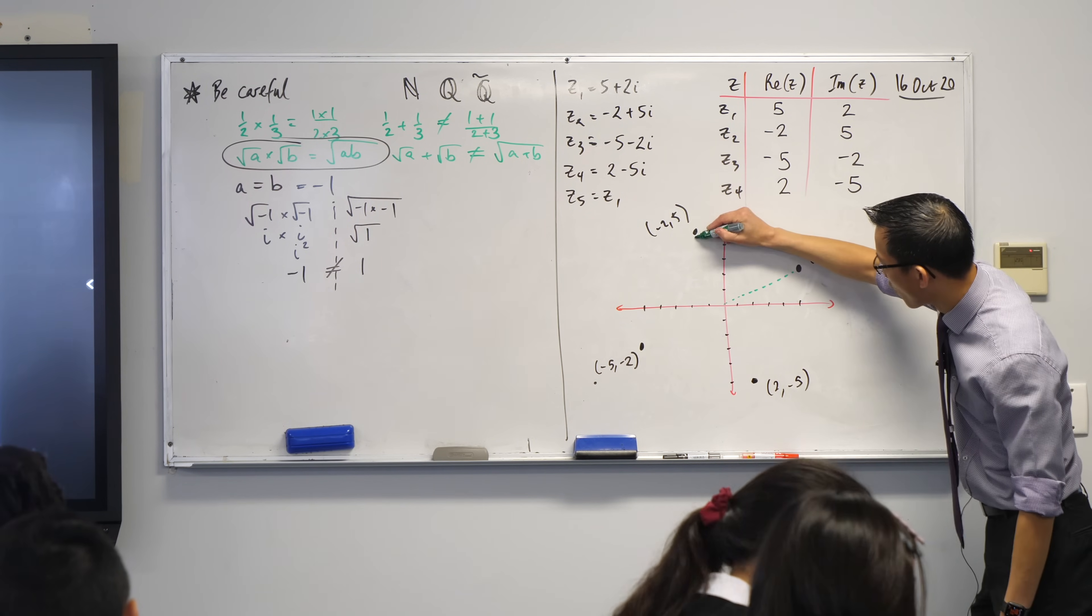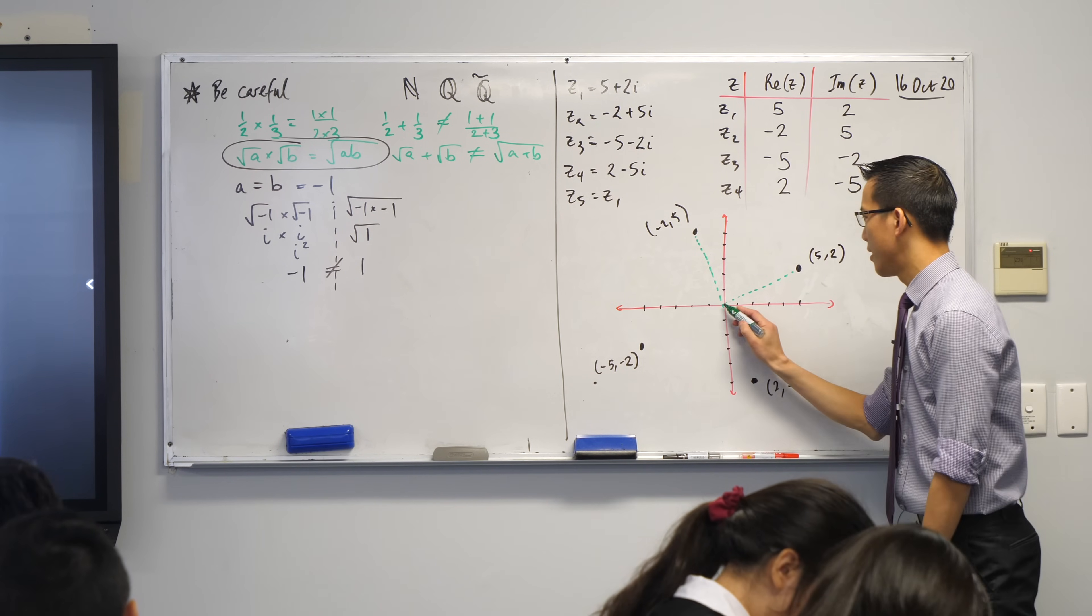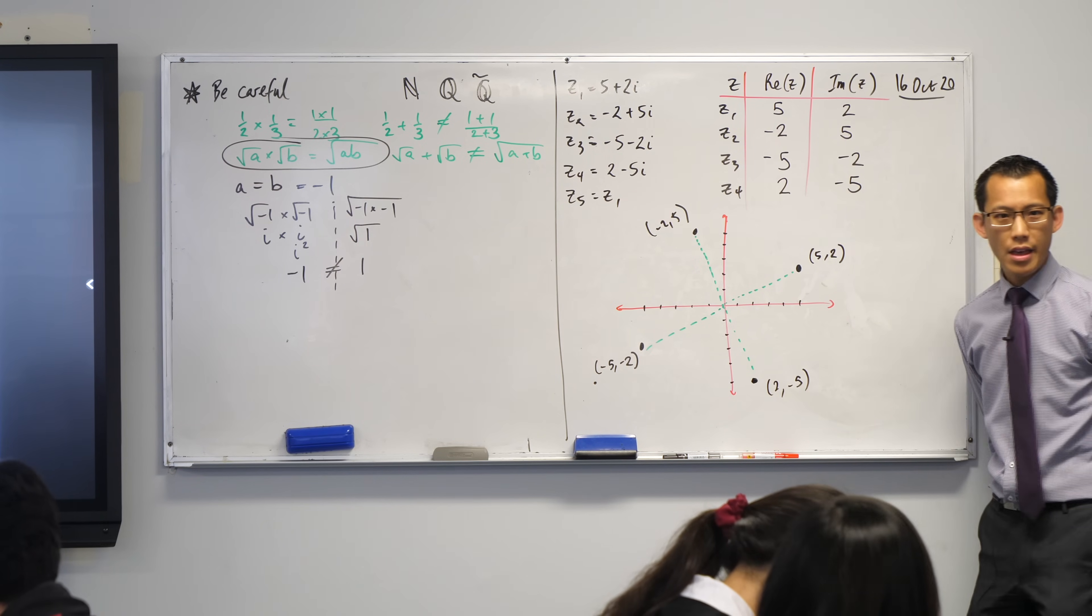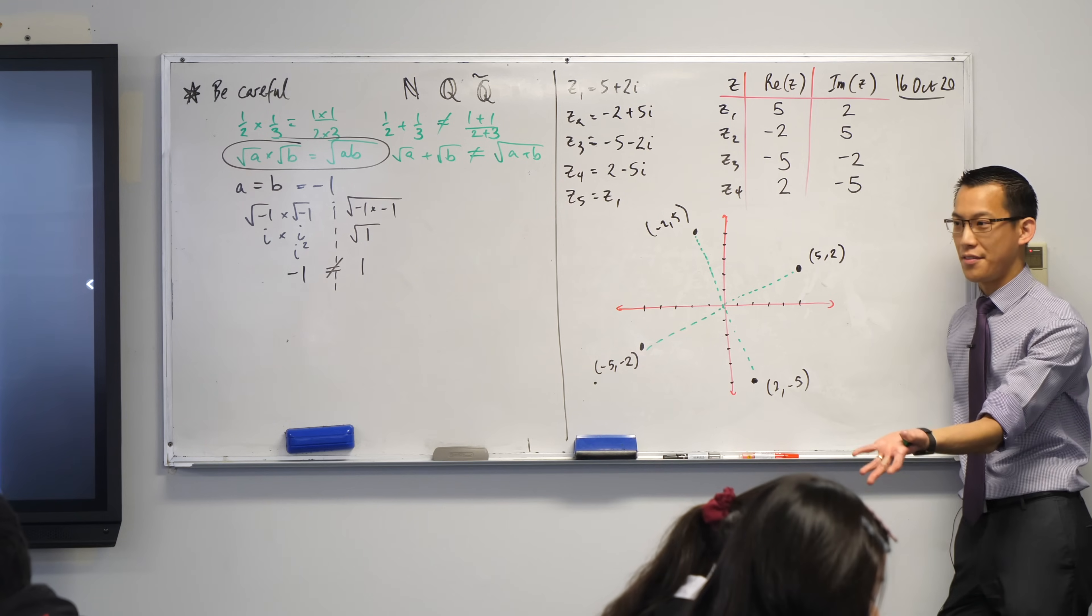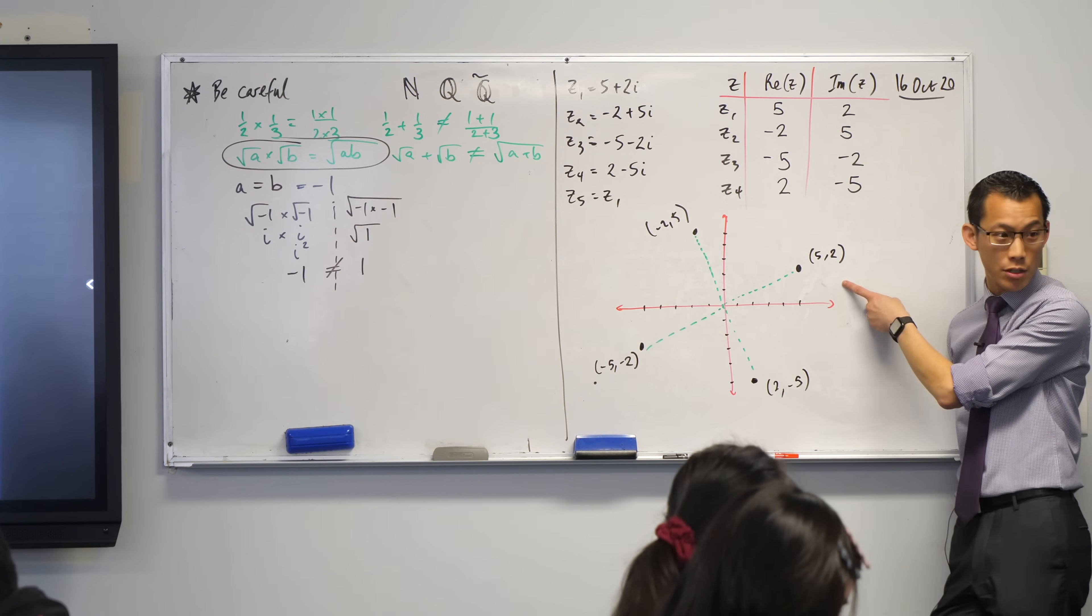To my point over here. And then another line, or an interval I should say, that goes from the origin to my next point. And then another line over here, another interval, another interval, right? Can you see, and remember the Z5, the Z5 I asked you to calculate, it ends up back over here. Ends up at five comma two.